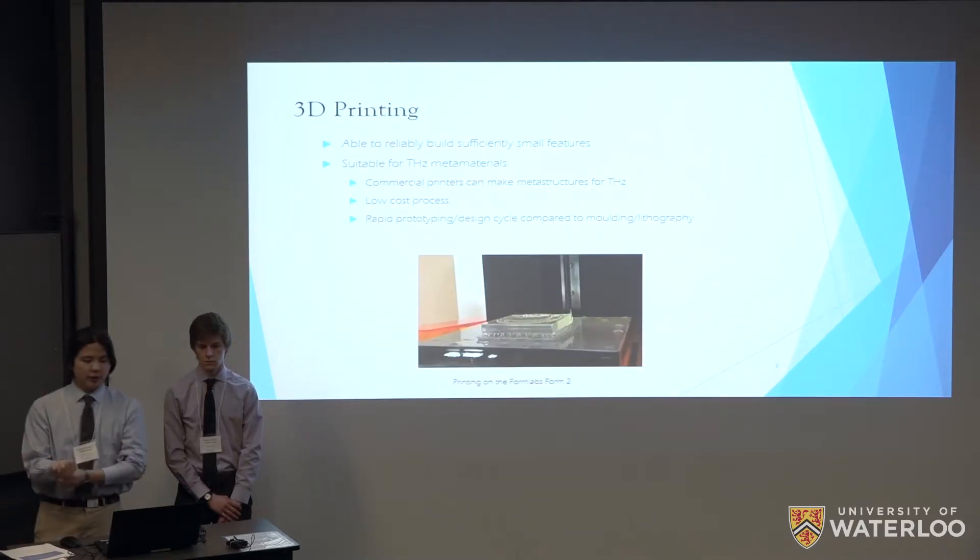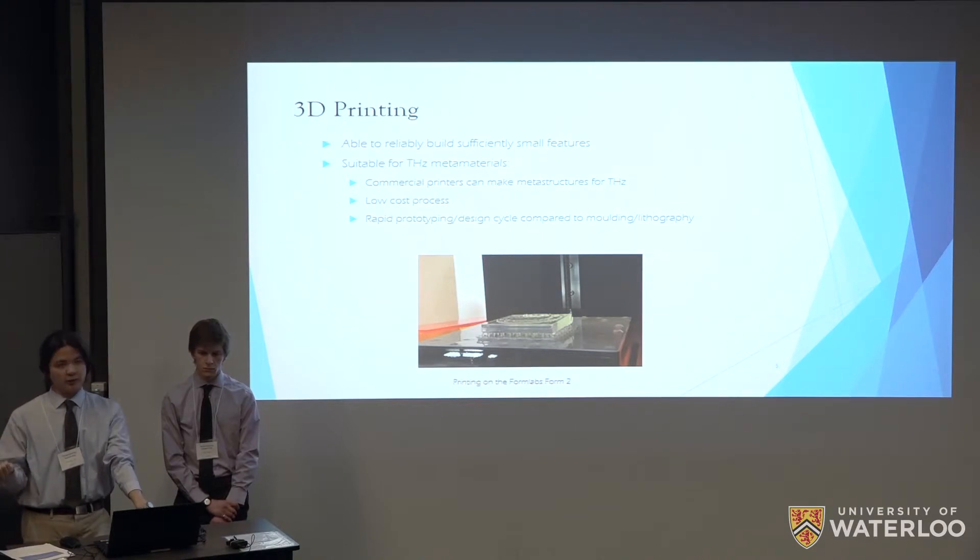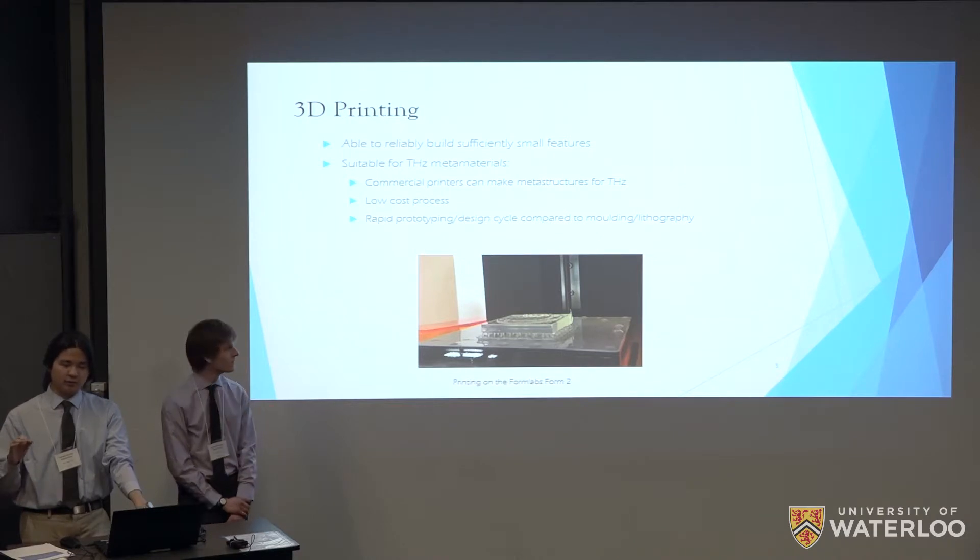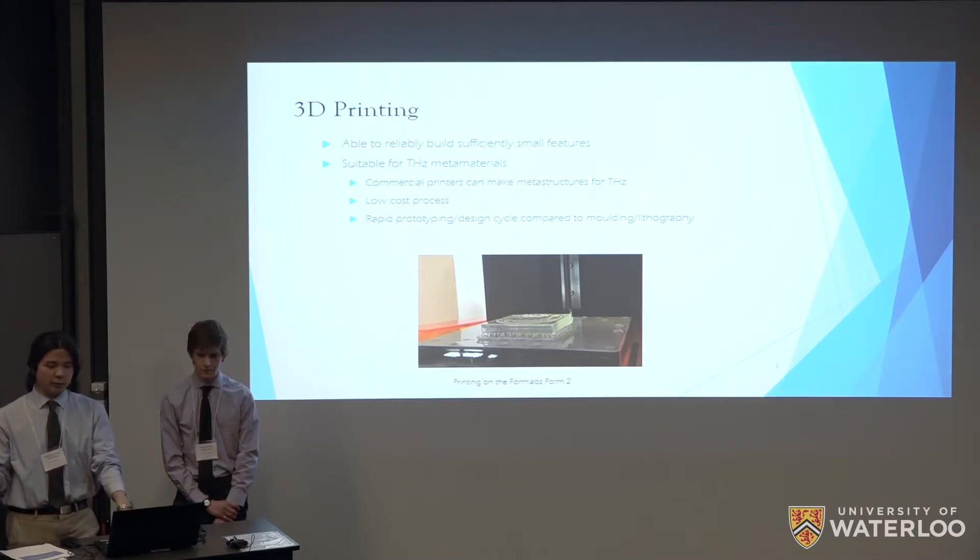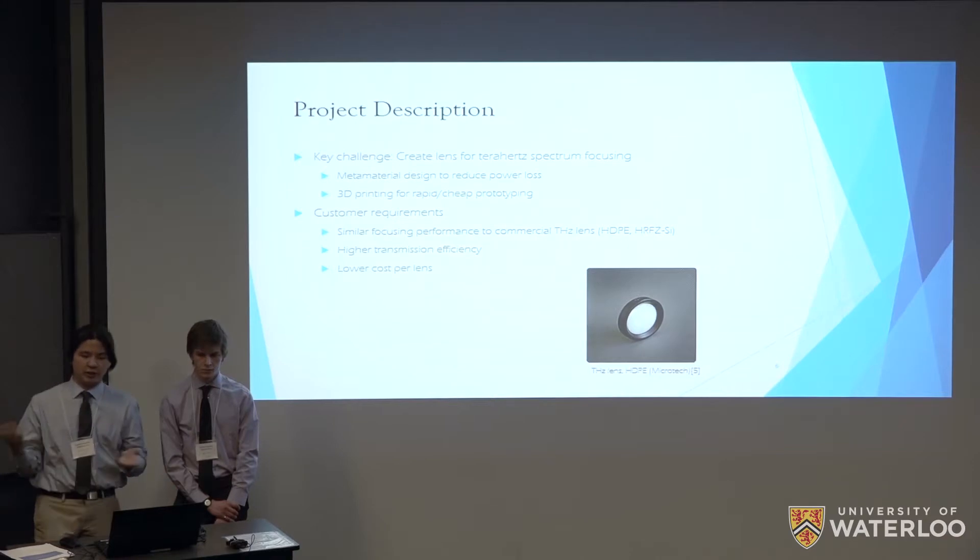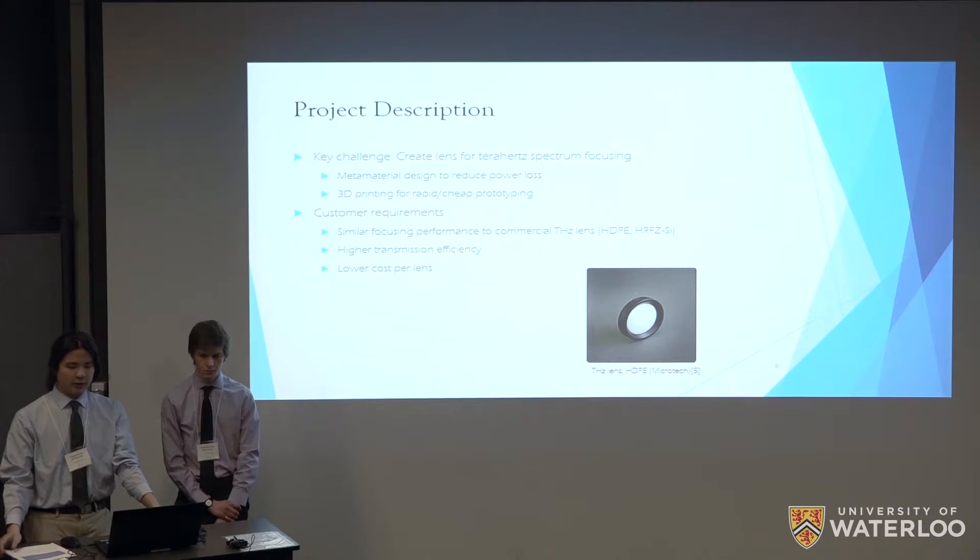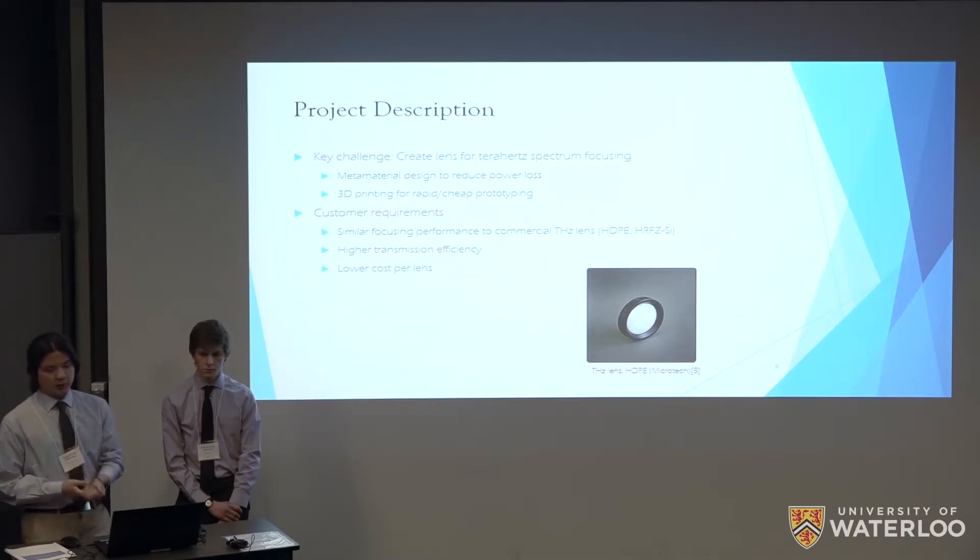Current commercial 3D printing is able to reliably build small structures, and this makes it particularly interesting for terahertz as the resolution of the commercially available printers are suitable for making terahertz structures that work in the terahertz range. Other advantages of 3D printing are that it has low cost and we can have a relatively quick design and prototyping cycle compared to other manufacturing methods such as molding or lithography. This leads into our project: we are trying to create a new terahertz lens that focuses terahertz radiation. The two core components of this project is that we'll be using a metamaterial design to reduce the power loss through the lens as well as 3D printing for rapid and cheap prototyping.